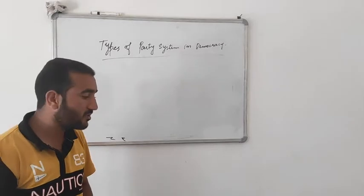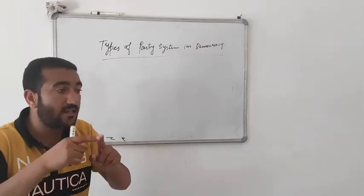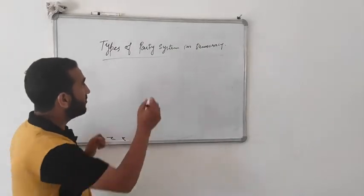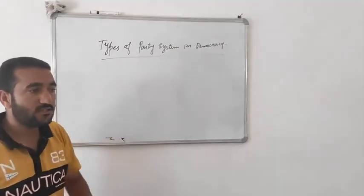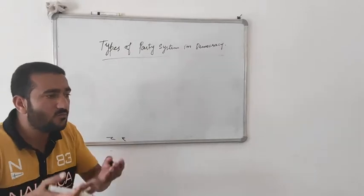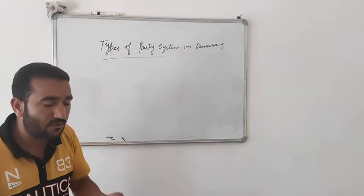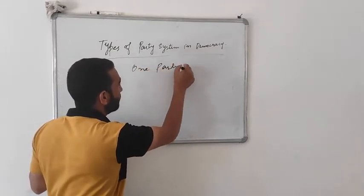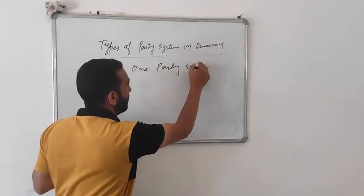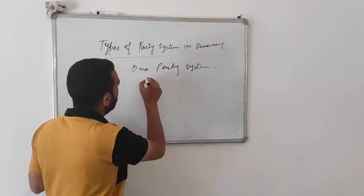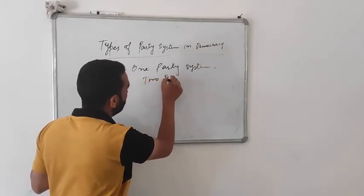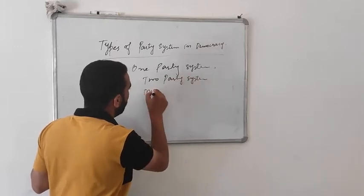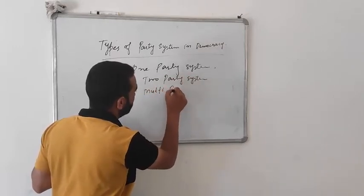Political parties are classified on numerous grounds. Note it down. There is the one-party system, two-party system, and multi-party system.